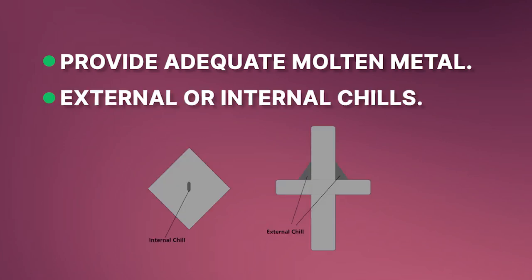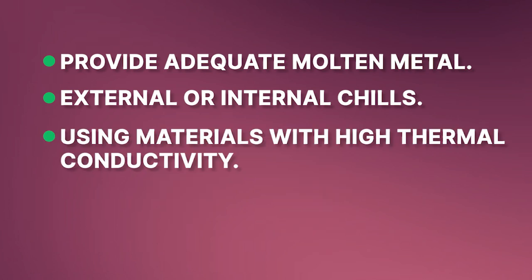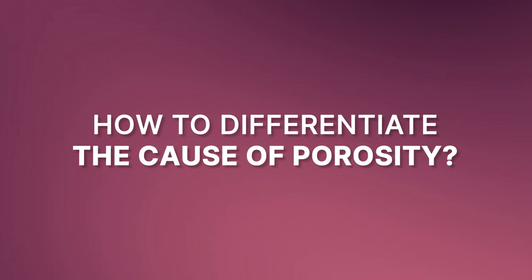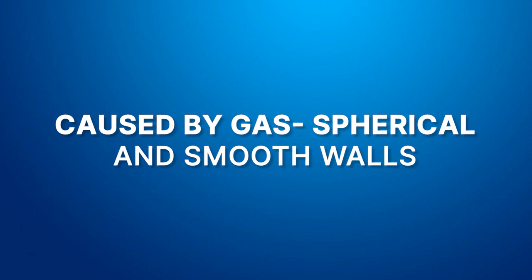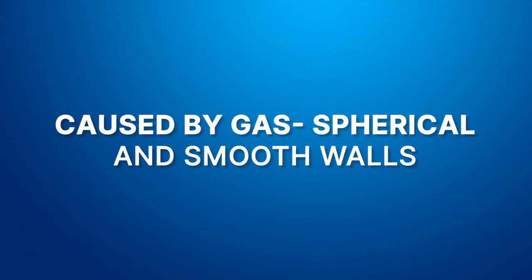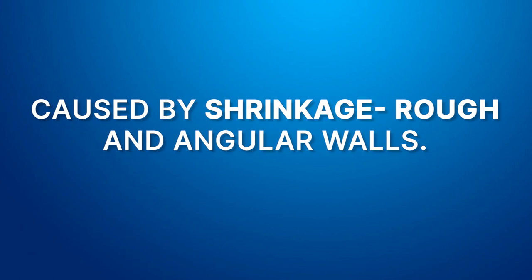External or internal chills are also used to prevent shrinkage porosity. A chill is an object used to promote solidification of a certain portion of molten metal. Using materials with high thermal conductivity for the mold also helps in avoiding formation of porous regions, as they improve the cooling rate of molten metal. It is important to determine whether the porosity was caused by shrinkage or by trapped gases by observing the shape of porosity. When caused by gases, the porous regions are spherical with smooth walls; shrinkage porosity has rough and angular walls, also known as shrinkage cavity.